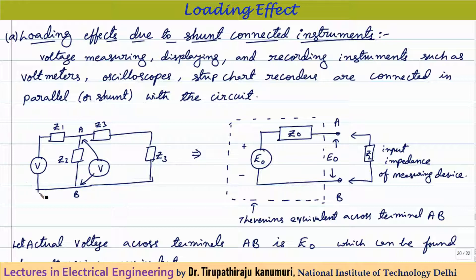To understand this, consider a circuit with a supply voltage V connected to impedances Z1, Z2, Z3, and Z4. I want to measure the voltage across points A and B — that is, across impedance Z2 — so I connect a voltmeter across it. To analyze this easily, the entire circuit excluding the voltmeter can be represented using Thevenin's equivalent circuit.